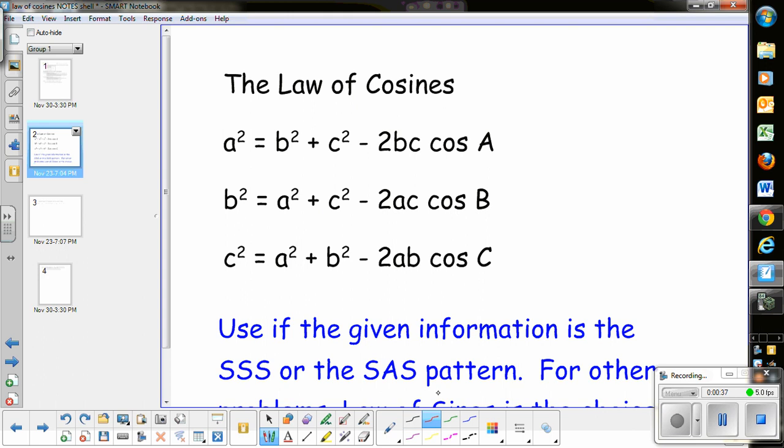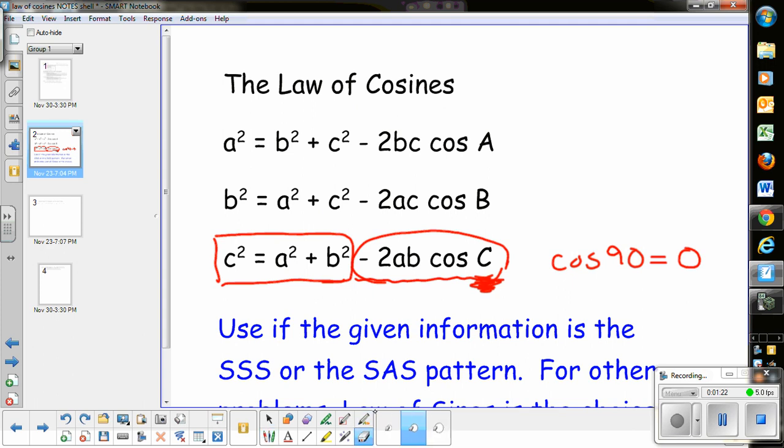The Law of Cosines is used when you're trying to find a missing side or angle in a triangle. The beginning looks just like the Pythagorean Theorem, a² + b² = c², but then there's extra stuff. When your angle is 90 degrees, the cosine of 90 is zero, so this part vanishes. That's why the Pythagorean Theorem works—it's a special case of the Law of Cosines.